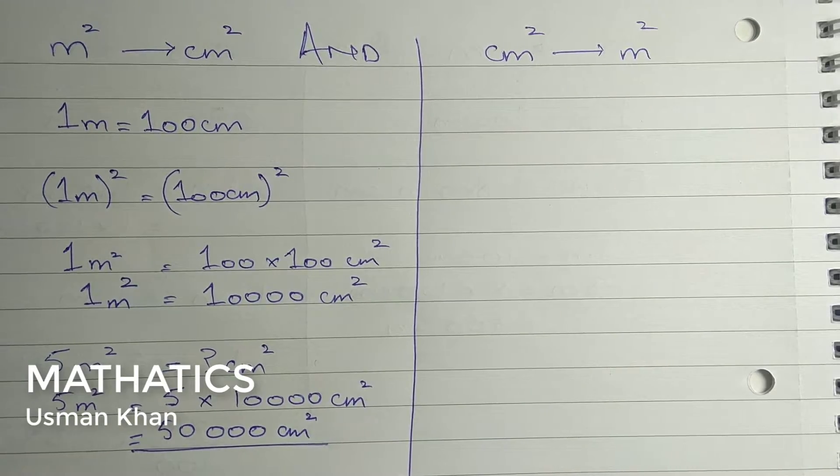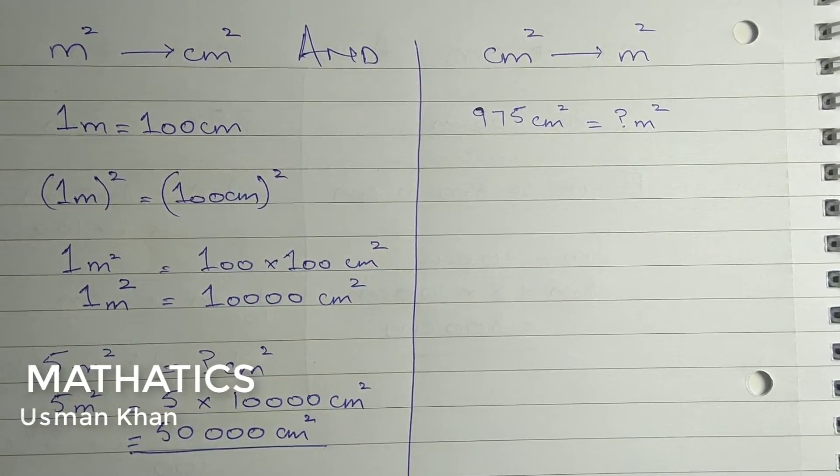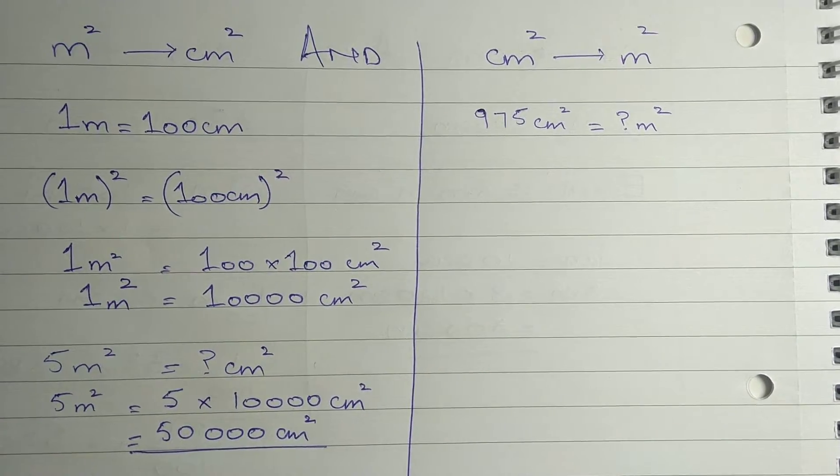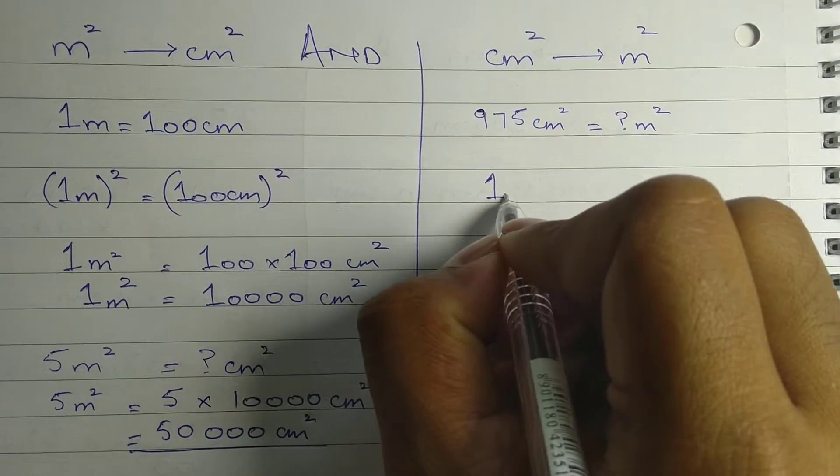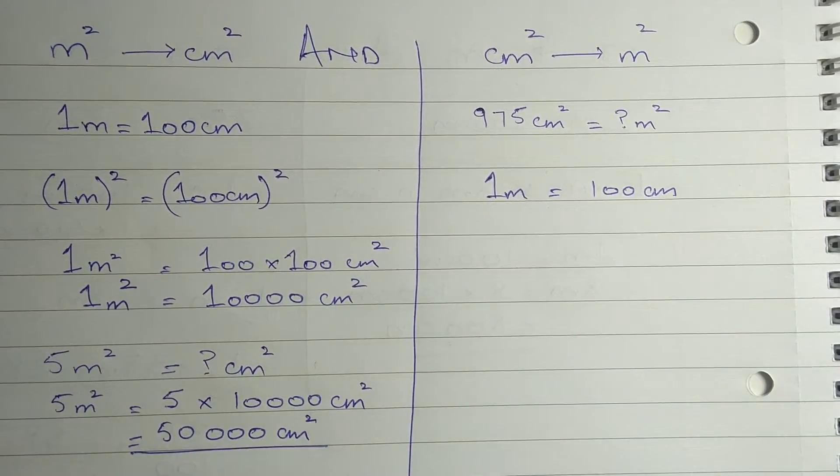If you get a question asking how many meters square are there in, for example, 975 centimeter square, we know the basic relation: 1 meter equals 100 centimeters.